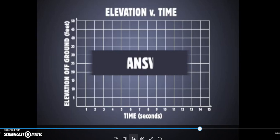Now before we show the answer, if you noticed, the man paused at about 6 or 7 seconds on the bridge, and that was at his highest elevation. So he's going up until he gets to about 6 or 7 seconds and reaches his highest point, then he stands still so the elevation is not changing, and then he starts to come down. So we can see the answer here.